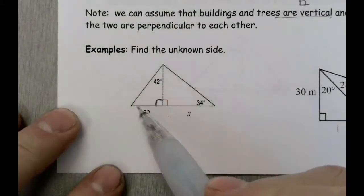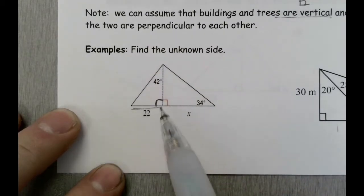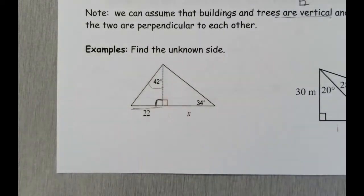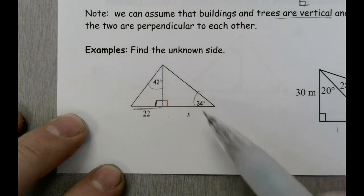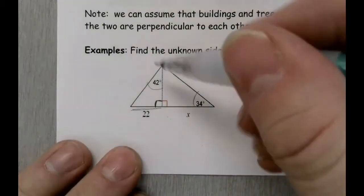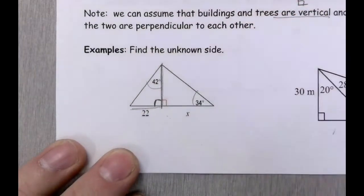I have two bits of information here. I know that this side is 22, and I know that this angle is 42 degrees. Over here, I want to know what this side is. But the only bit of information you have about this triangle is that it's 34 degrees — I need one more bit of information. So what I'm going to do is find that shared common side.